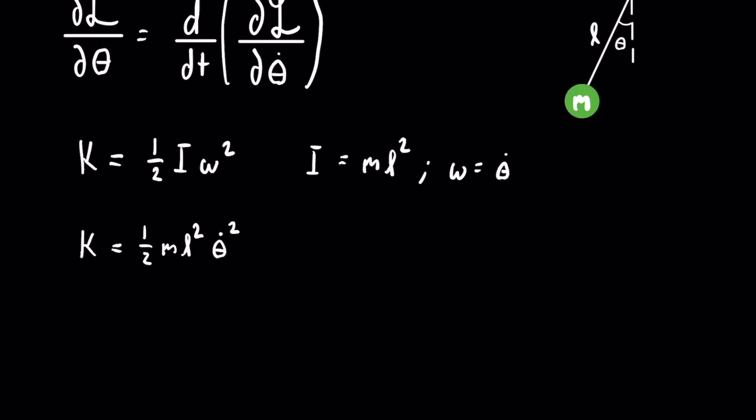Next we have our potential energy. I like to take my potential energy from the top where the string meets the ceiling. A lot of people don't like to do that because the potential energy would always be negative, but it makes things a lot easier. The gravitational potential energy is mass times little g times the distance from the zero point — in this case the ceiling — so that will be equal to negative mgl times cosine of theta.